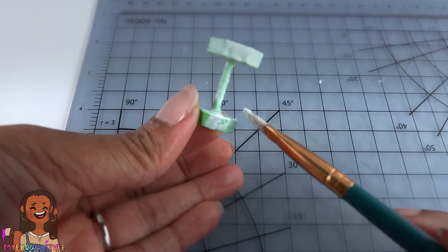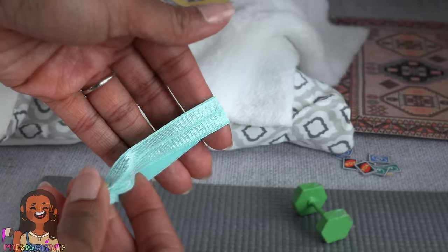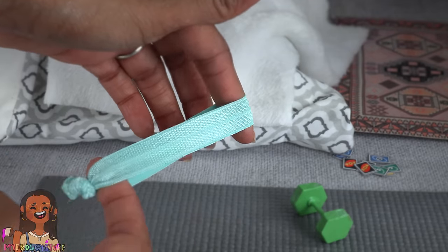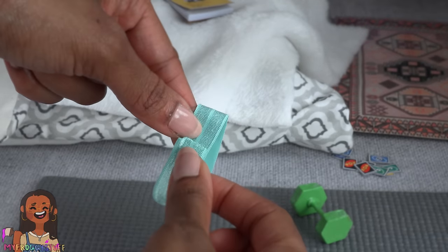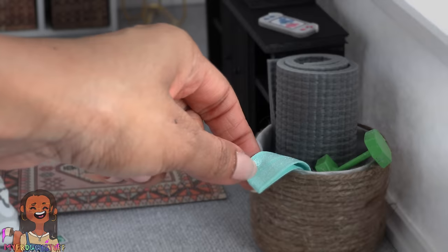Take a flat elastic hair band, cut off the knot. Overlap and glue down the ends to make a resistance band. We store all of the workout items in the basket.